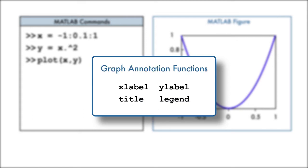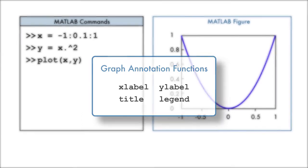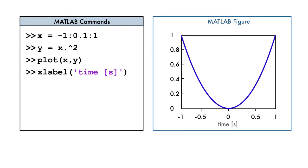We can add a label to the x-axis with the xLabel function. Notice that we pass the label enclosed in single quotation marks as input to the xLabel function.